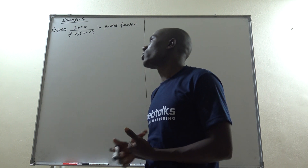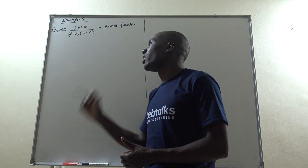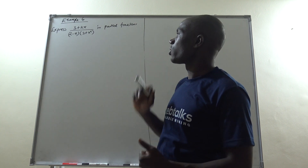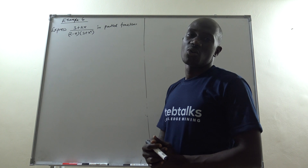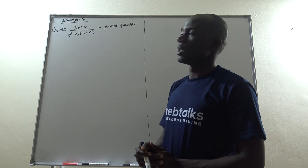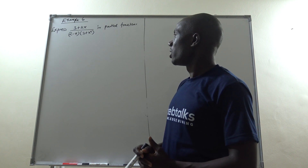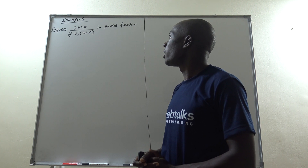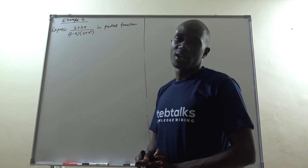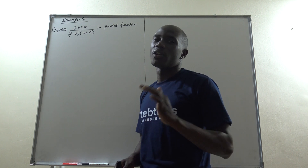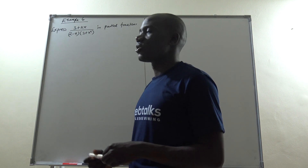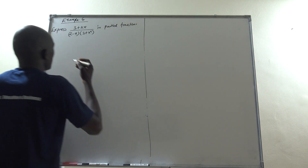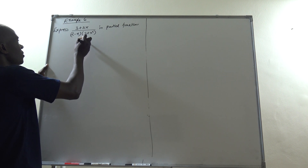Example 6: express (3 + 2x) over (2 − x)(3 + x²) in partial fractions. We are going to look at the solution.